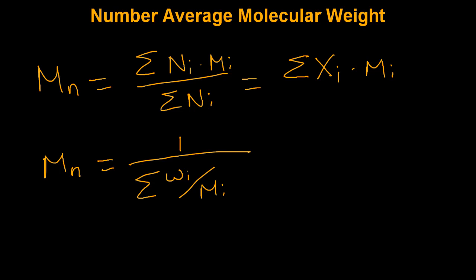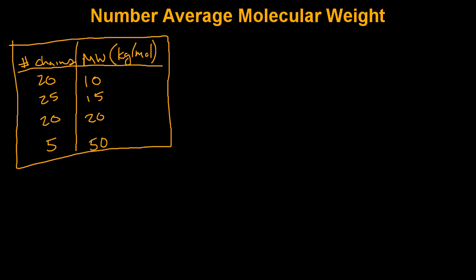Using these mathematical definitions, we can solve for the number average molecular weight of a polymer sample. In this table, we have a theoretical polymer distribution. In the left column, we have the number of chains of a corresponding molecular weight, which is in the right column. These molecular weights are in kilograms per mole. Using the definition we defined earlier, we will be able to solve for the number average molecular weight.